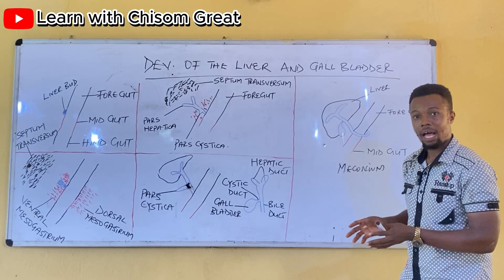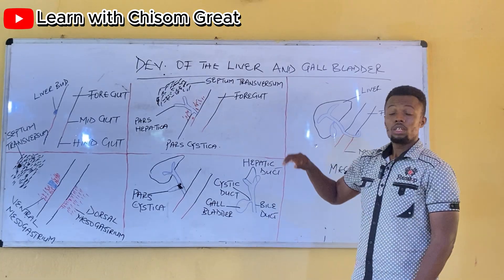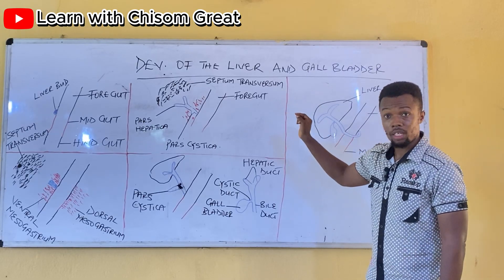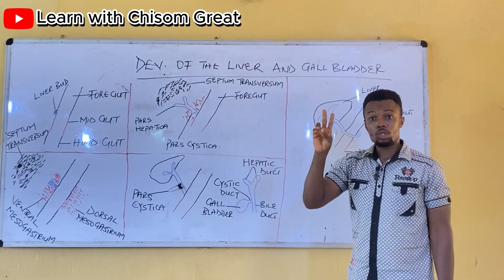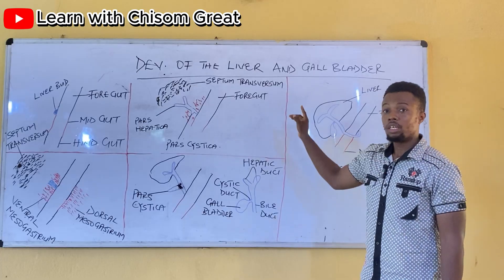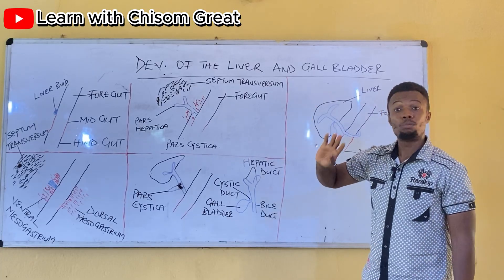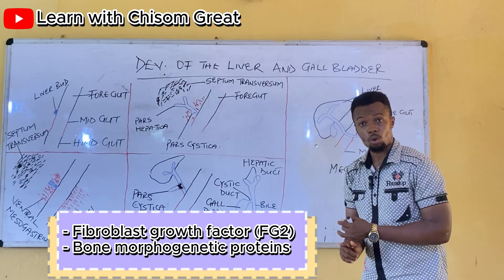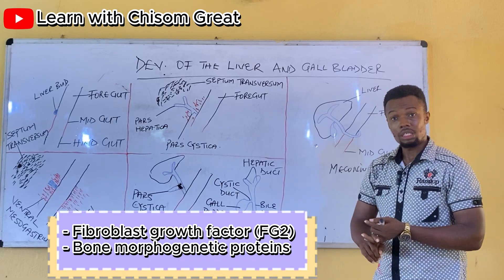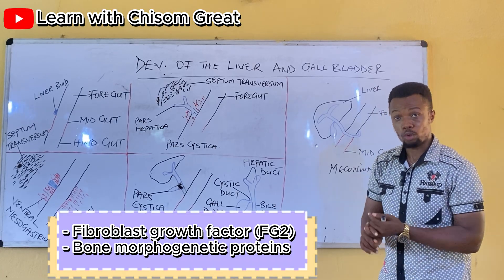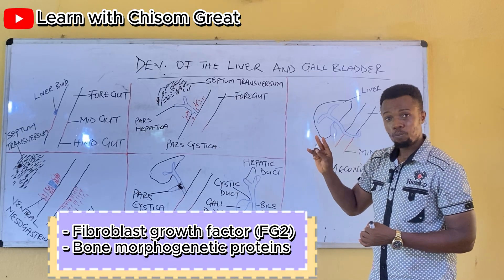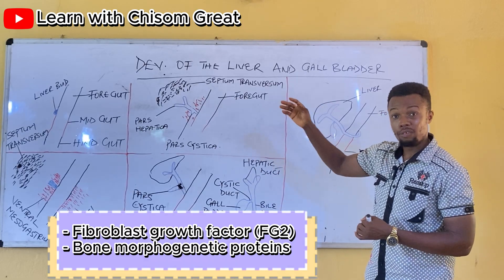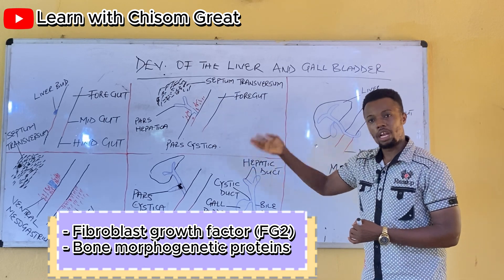The meconium is black as a result of the presence of bile in the stool. Coming to the molecular regulation of these developments, two factors regulate the development of the liver at the molecular level: the first one is fibroblast growth factor, and the second one is bone morphogenetic proteins.